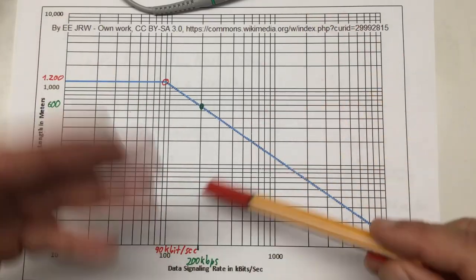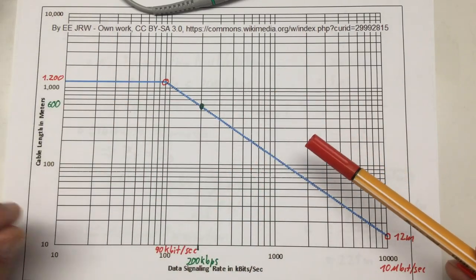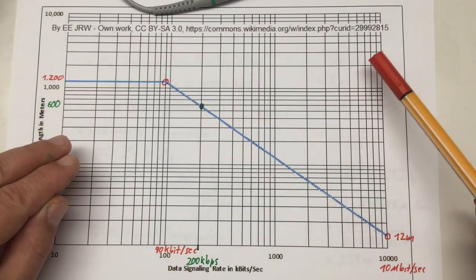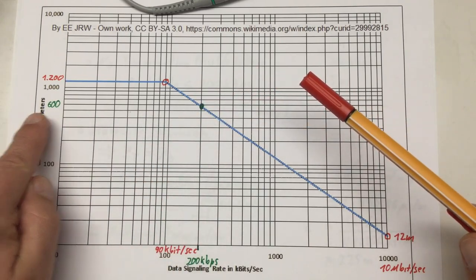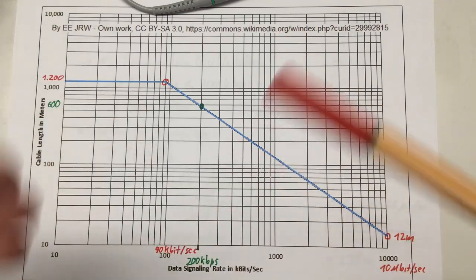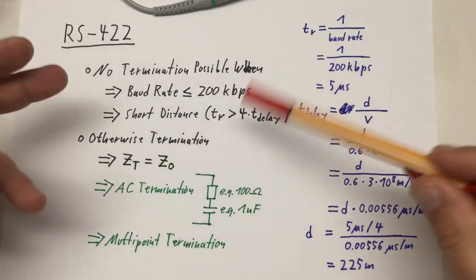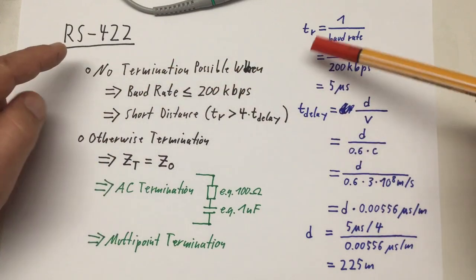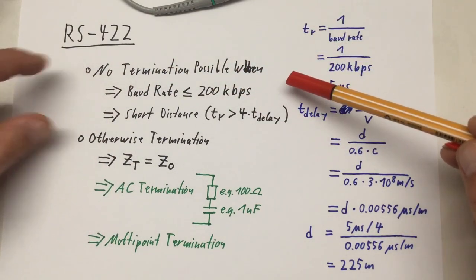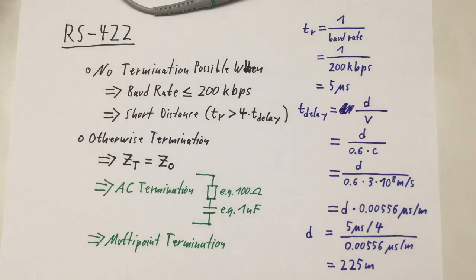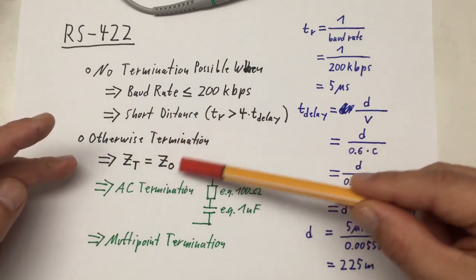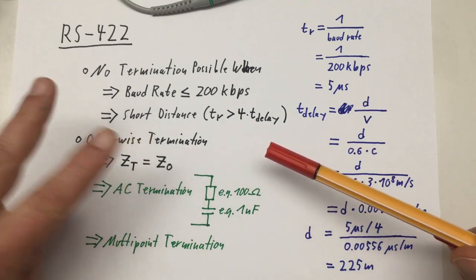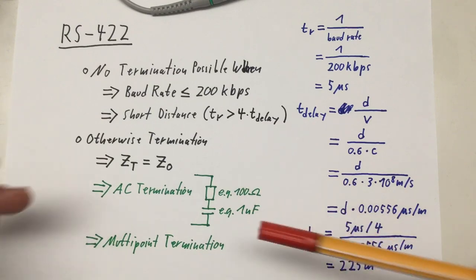Looking again at this graph, which I've already shown in the basics, we see that at 200 kilobits per second we can use a cable length of almost 600 meters. So not terminating has its drawbacks, but it also has one advantage: not having that termination resistor at the end means your line driver or transmitter doesn't have to work that hard. In any case, if you don't meet these two conditions, you have to use termination, and the standard is to use a terminating resistor that has the same value as the impedance of your transmission line.